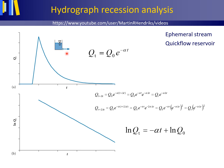The recession curve can mathematically be described as an exponential decrease starting at the hydrograph peak. Qt is discharge at time t after the start of the recession in cubic meters per second. Q0 is discharge at the start of the recession in cubic meters per second, thus at the hydrograph peak where t equals 0 seconds. E is the base of natural logarithms, 2.71, etc. Alpha is the recession constant per day, and t is time in days.